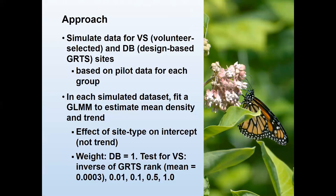This is a simulation study where I took those pilot data to represent the density, probability of occurrence, inter-annual variance, and trends for volunteer-selected sites versus design-based sites. I used those means and variances to simulate data sets and asked: in this scenario, 10% of them will be volunteer-selected; in another scenario, 50% will be volunteer-selected. What are the consequences of that?